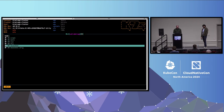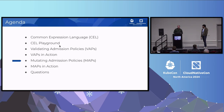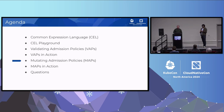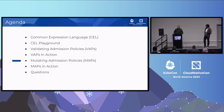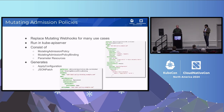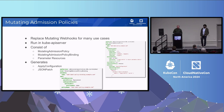The next topic is mutating admission policies — something which has only just made it into the Kubernetes codebase, going in as an alpha release in 1.32. Validating admission policies first hit alpha in 1.26, were beta in 1.28, and went GA in 1.30. Mutating admission policies are to mutating webhooks what validating admission policies are to validating webhooks — they run in the API server, have a policy, binding, and parameter resources the same way, but have a mutation section instead of a validation section.